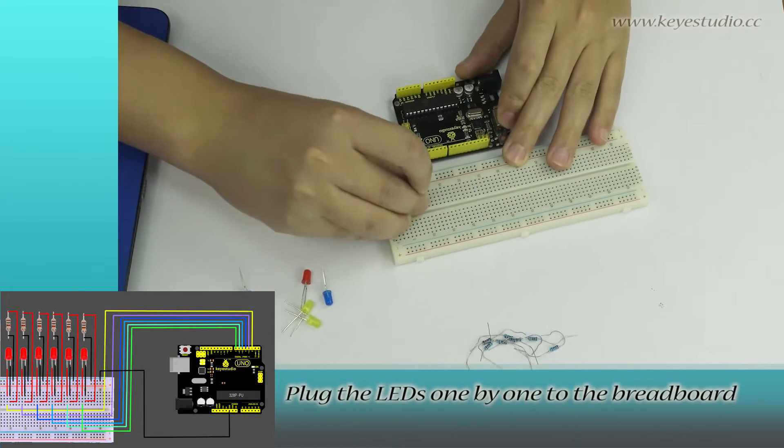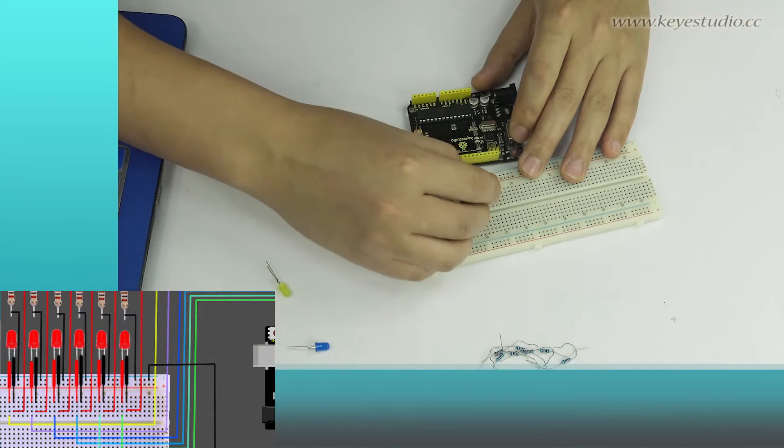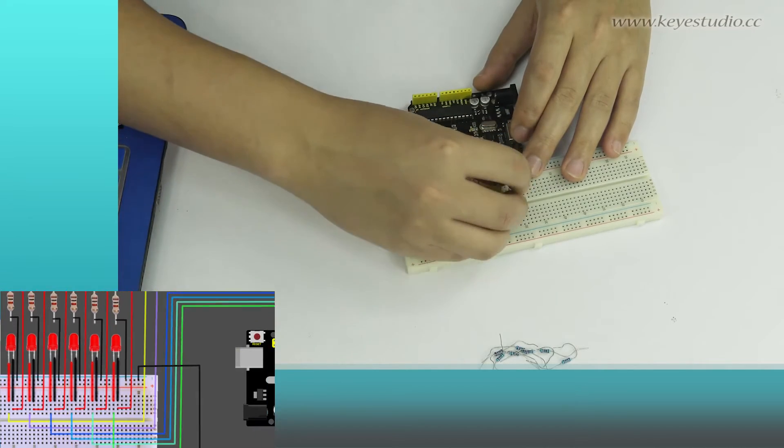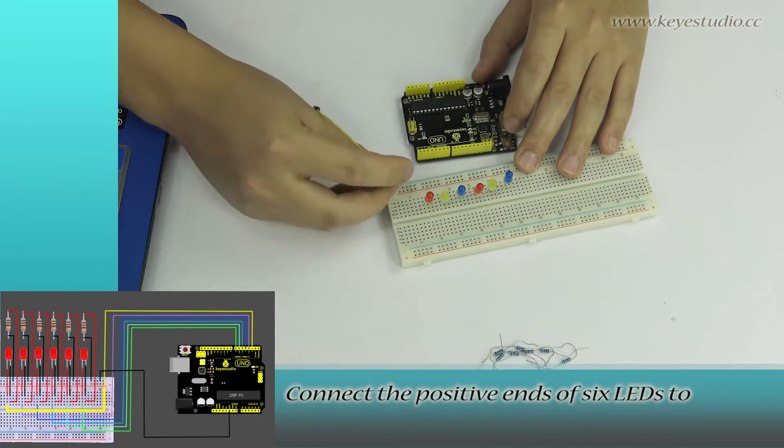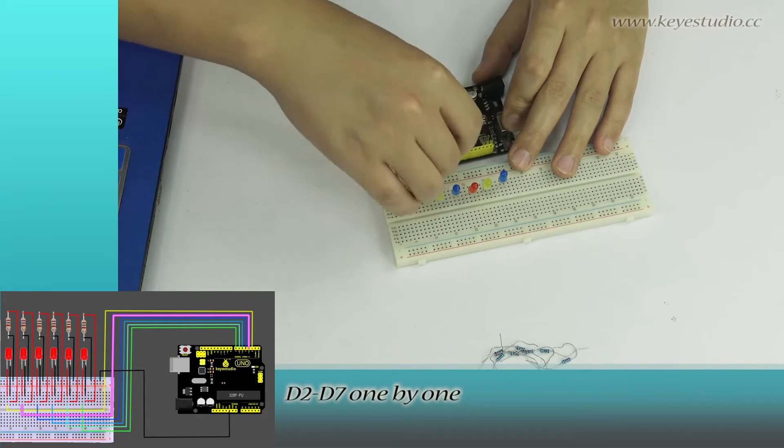Plug the LEDs one by one to the breadboard. Connect the positive ends of six LEDs to D2 to D7 one by one.